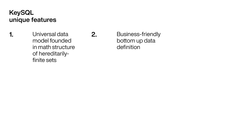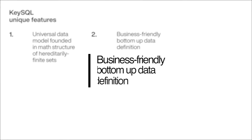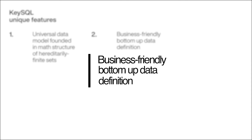Business users fluent in SQL can grasp the bulk of KeySQL in just a couple of days. Because of the hereditarily finite set foundation, KeySQL features a business-friendly bottom-up data definition that mirrors the way people think and organize information. For example, a child learns the concept of a chair and a table before developing the concept of furniture — the higher concepts in the semantic hierarchy derive their meaning from the lower concepts. In SQL, data definition is top-down: columns exist only within the context of the higher object, the table, and a column with the same name in another table can have a different meaning.